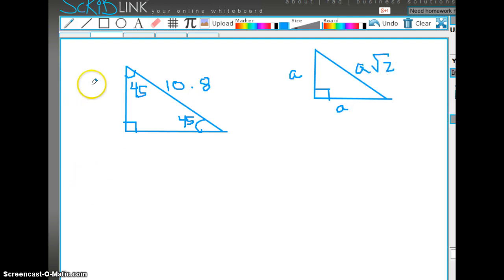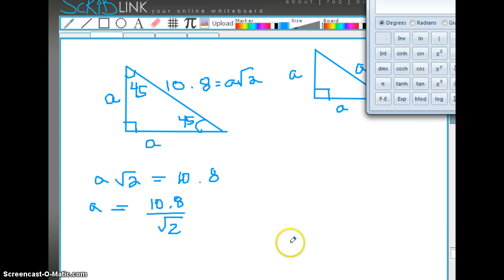Let's write this out algebraically. A square root of 2 is equal to 10.8. So A is equal to 10.8 divided by the square root of 2. So let's try that out in our calculator.